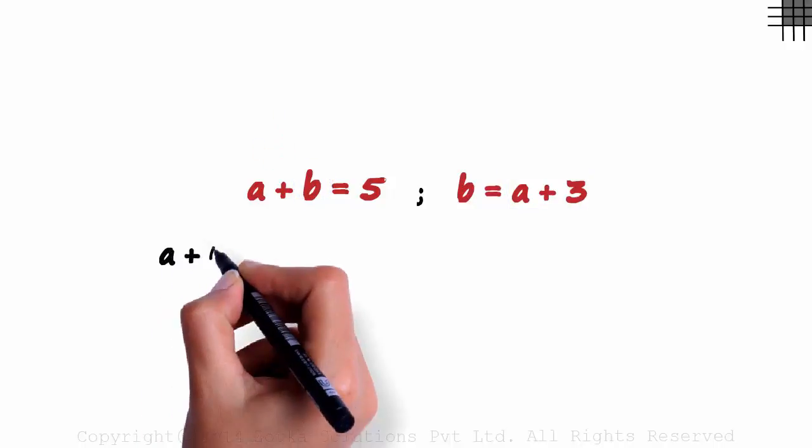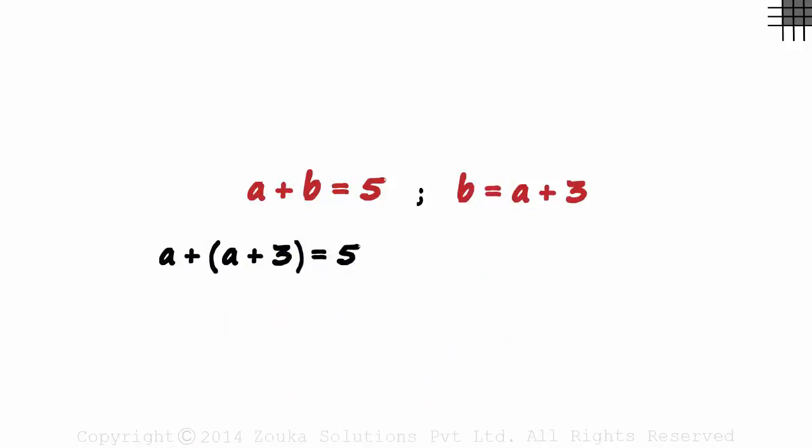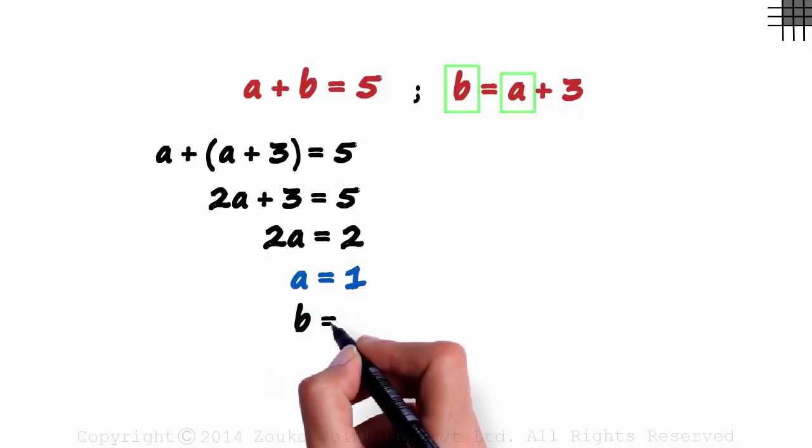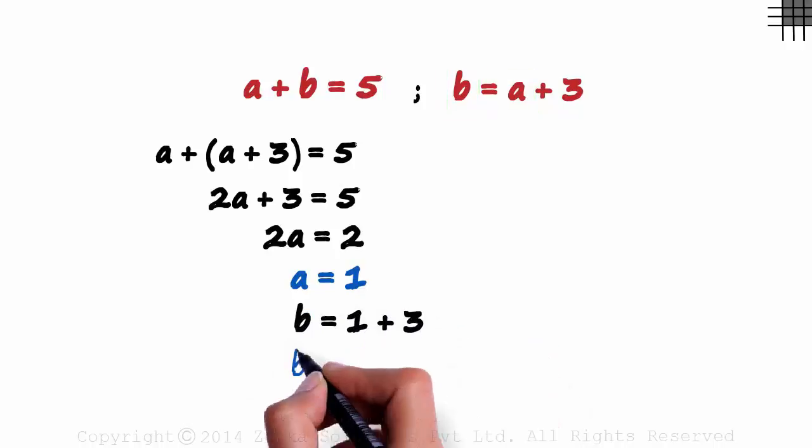We get A plus A plus 3 equals 5. Solving this, we get the value of A as 1. Once we get the value of one variable, we can easily substitute it in the other equation and get the value of the other. Substituting the value of A here, we get the value of B as 1 plus 3 which is 4.